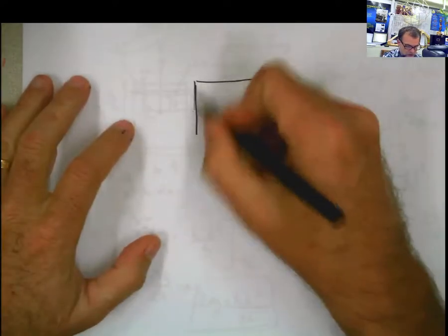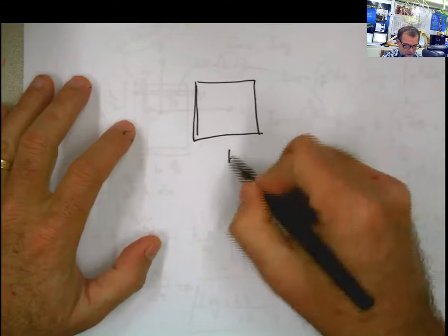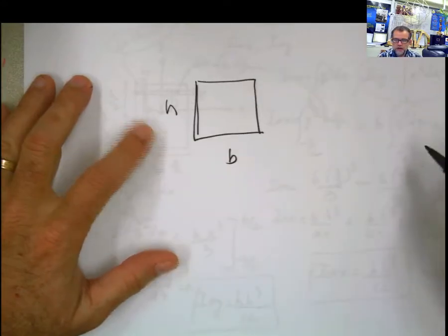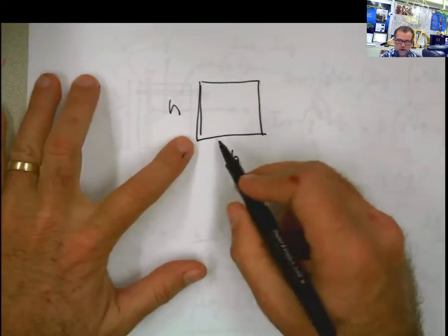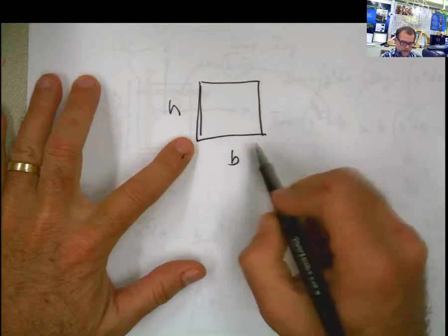Well, the procedure is exactly the same procedure that we used before. We just have our figure, b and h. But now, because the moment of inertia is asked to be calculated with respect to the base, the only difference is that I'm going to put my axis of reference at that point.